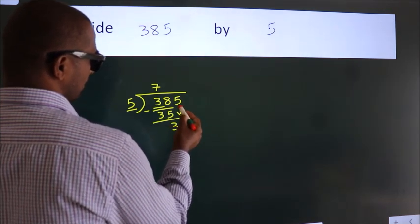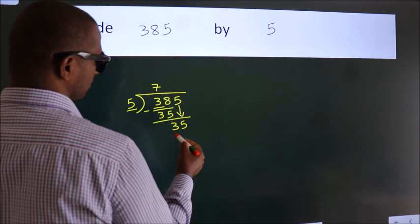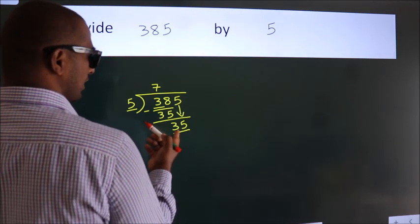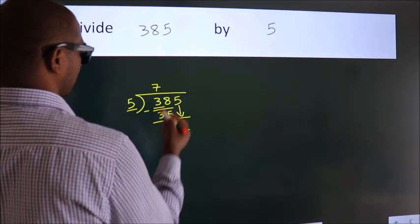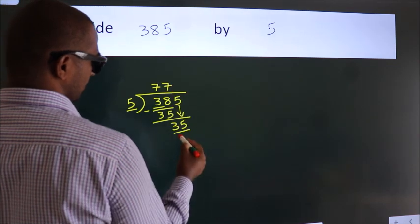So 35. When do we get 35 in the 5 table? 5×7=35.